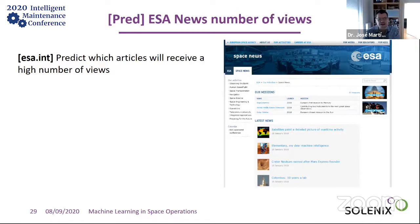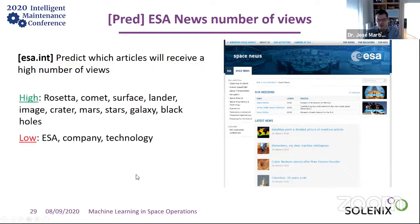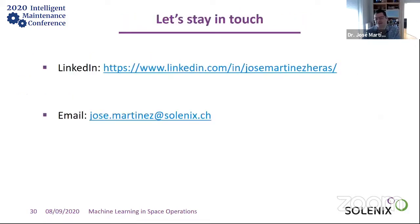We also do text analysis — for example, predicting which ESA articles will receive a high number of views before publishing. Interestingly, articles about Rosetta, comets, craters, and Mars perform well immediately, while articles about technologies and companies attract much less attention. That's a lesson learned. You can connect with me on LinkedIn or send me an email.